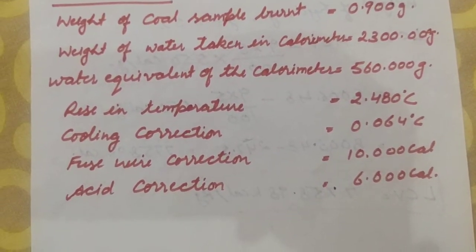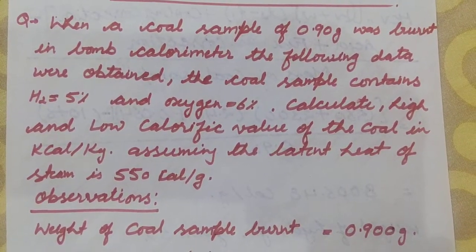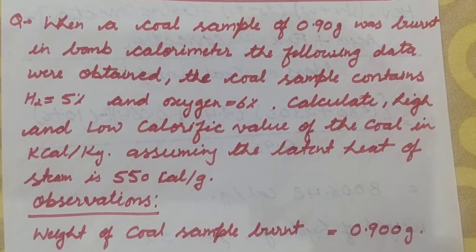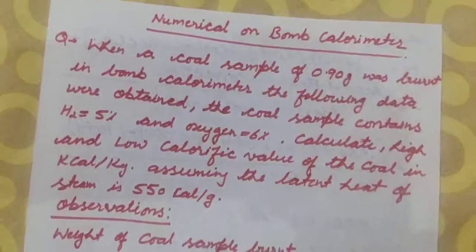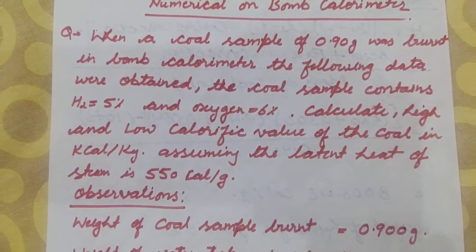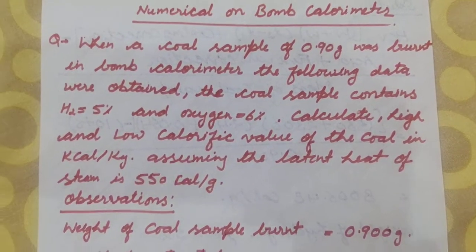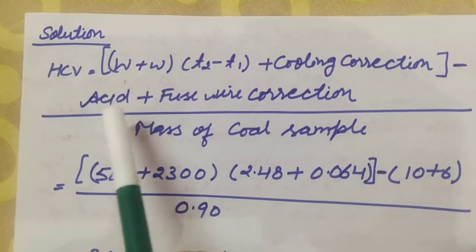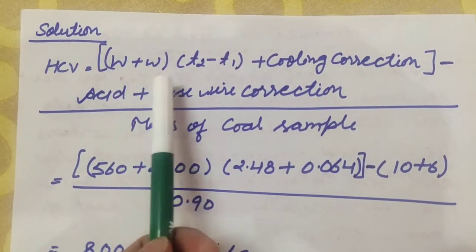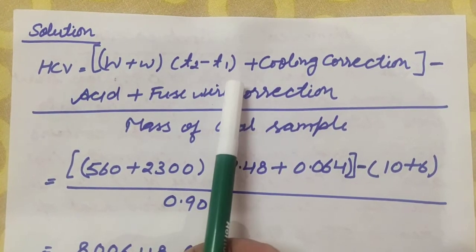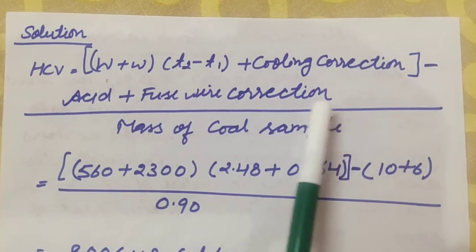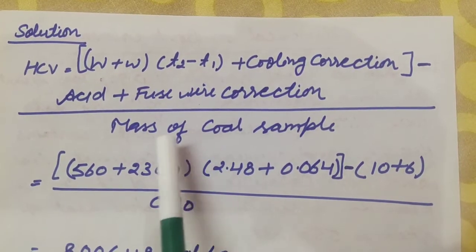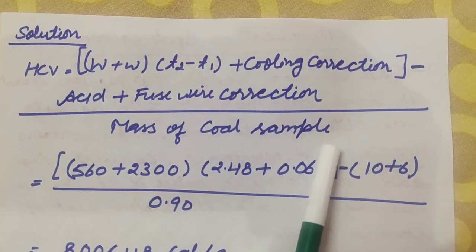With this data, we calculate the calorific value. The solution formula is: HCV = [(W + w)(T2 − T1 + cooling correction) − acid correction + fuse wire correction] divided by the mass of the coal sample, where W is the weight of water taken in the calorimeter and w is the water equivalent of the calorimeter.